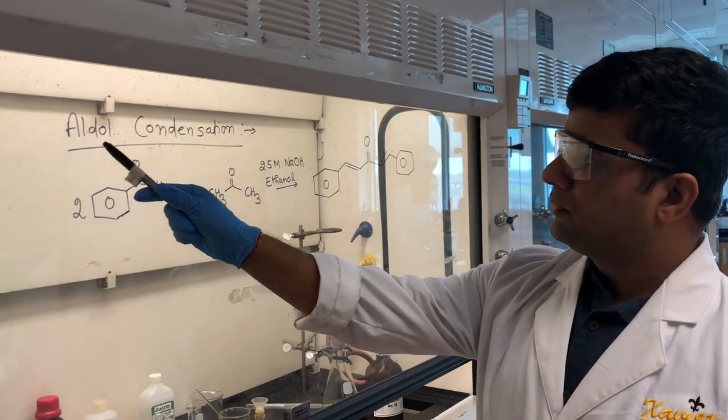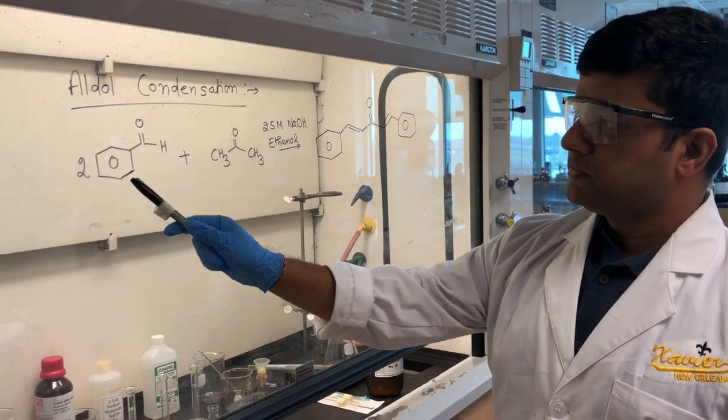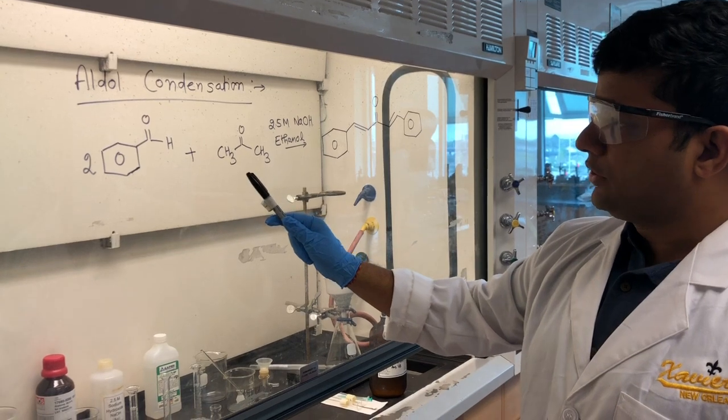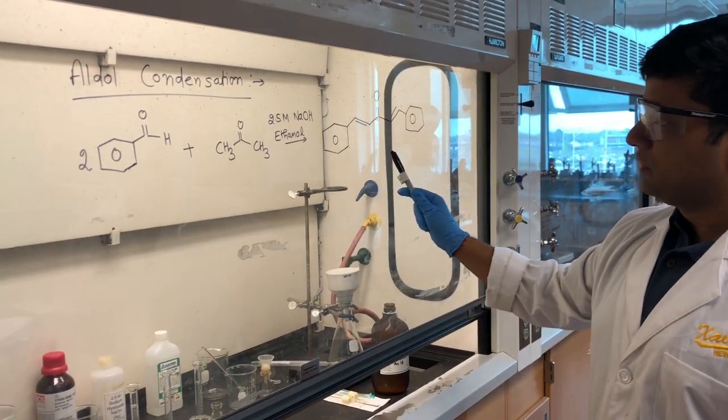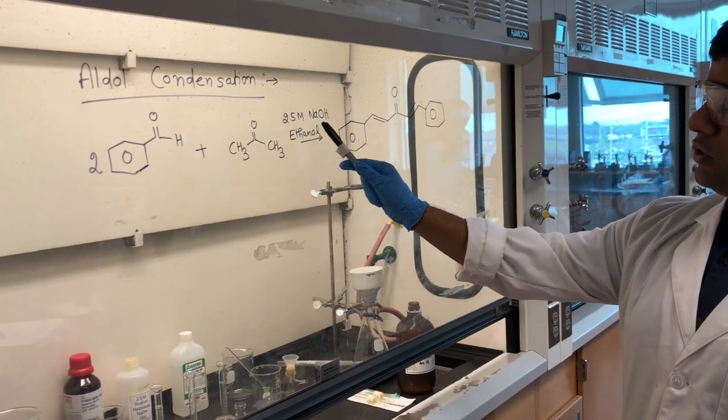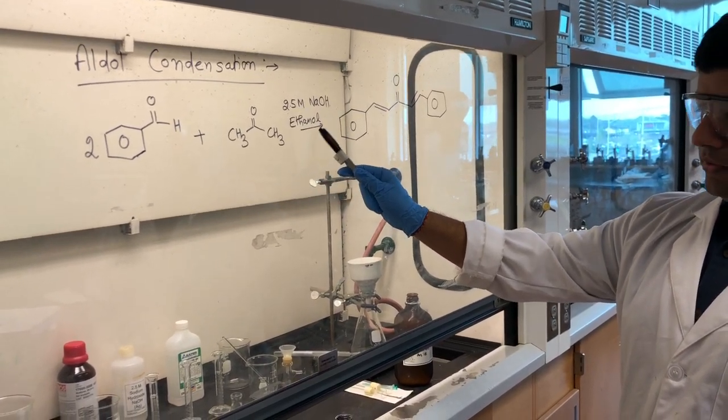Today we are going to perform aldol condensation. We are going to use two moles of benzaldehyde and acetone to give a conjugated product. We will use 2.5 molar sodium hydroxide as a base and ethanol as a solvent.